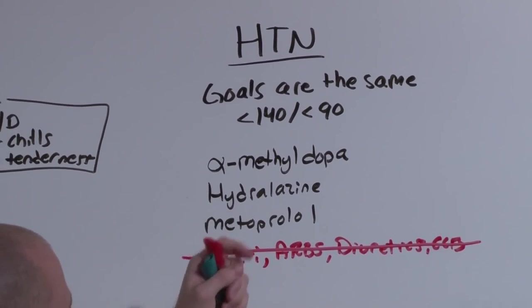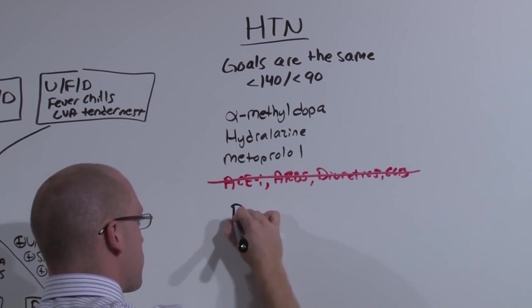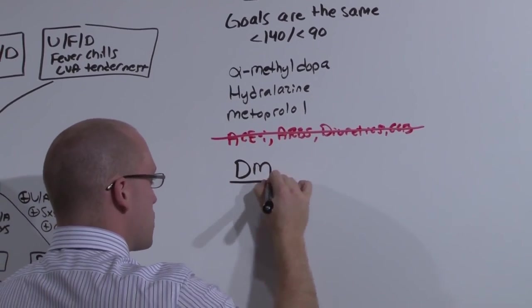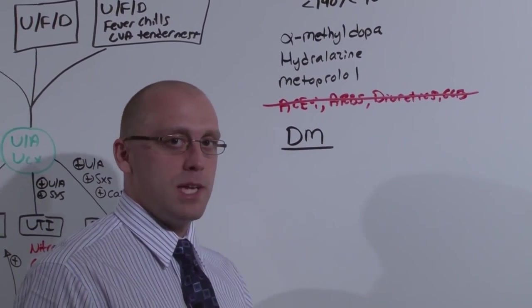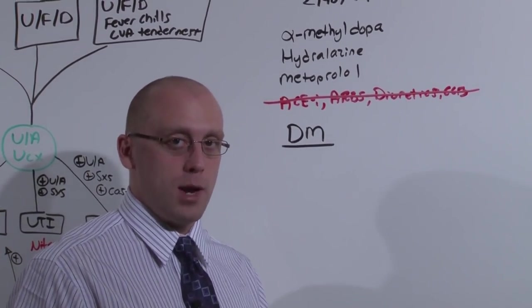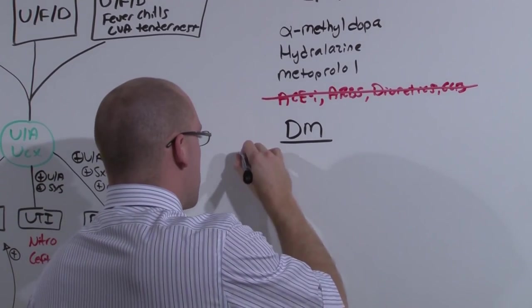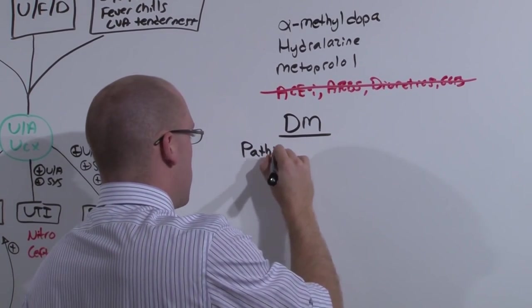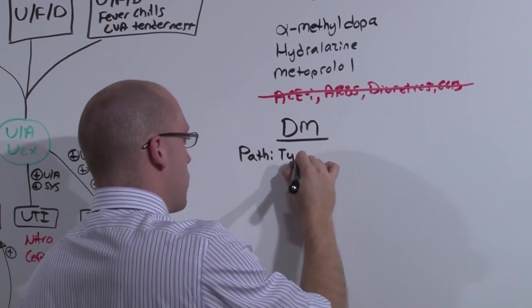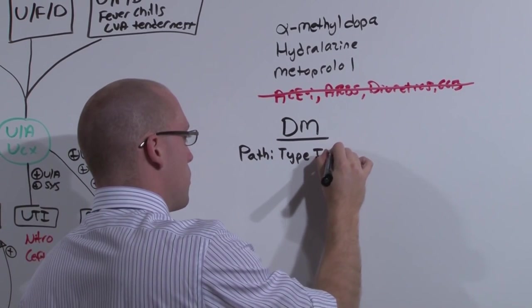Usually going hand in hand with hypertension is diabetes. And again, this is not gestational diabetes, this is the diabetes that someone has before they get pregnant. There's type 1 diabetics and type 2 diabetics. Type 1 diabetics are a product of autoimmune destruction of the pancreas.